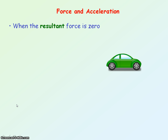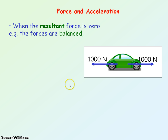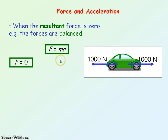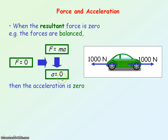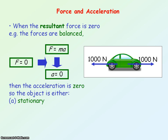When the resultant force is zero — the overall force is zero — for example when the forces acting on the car are balanced, meaning they are equal in size but opposite in direction, then from F equals mA, if the resultant force is zero, the acceleration will be zero. So if the object is not accelerating, it is either stationary at rest or it's moving at a constant velocity.